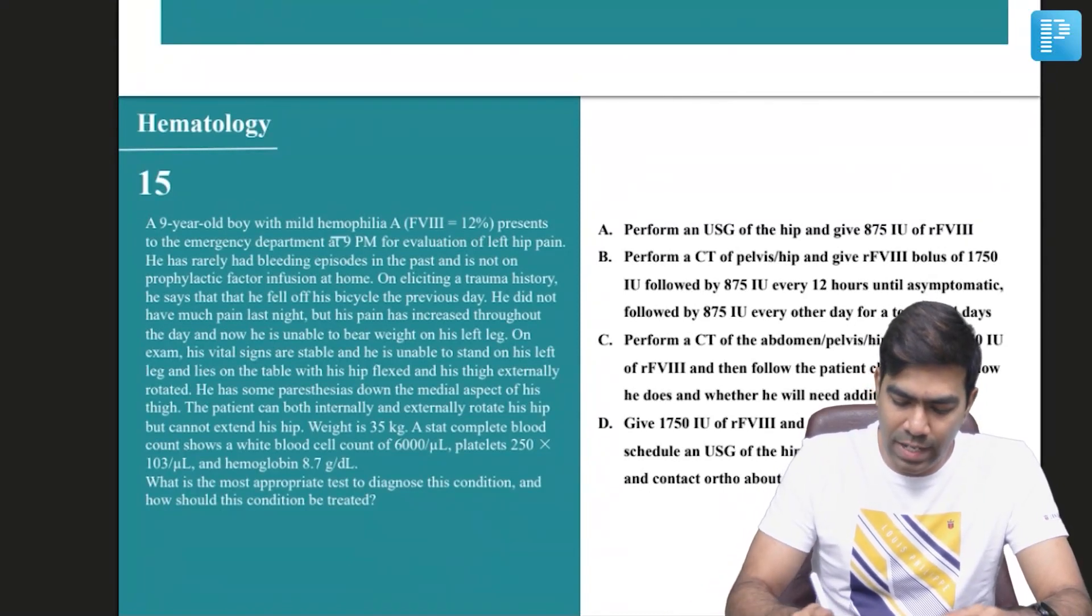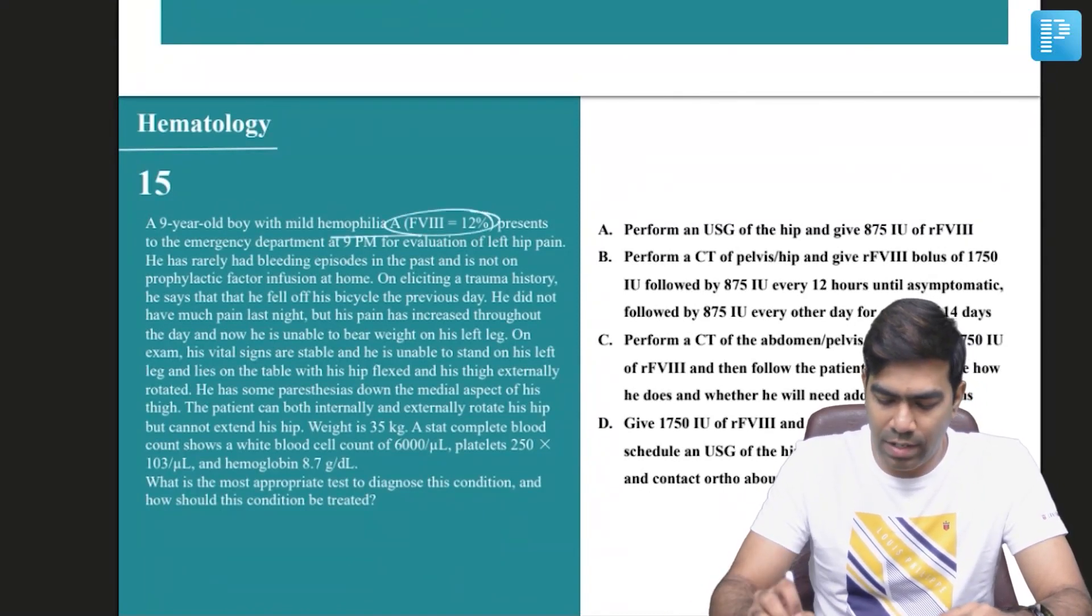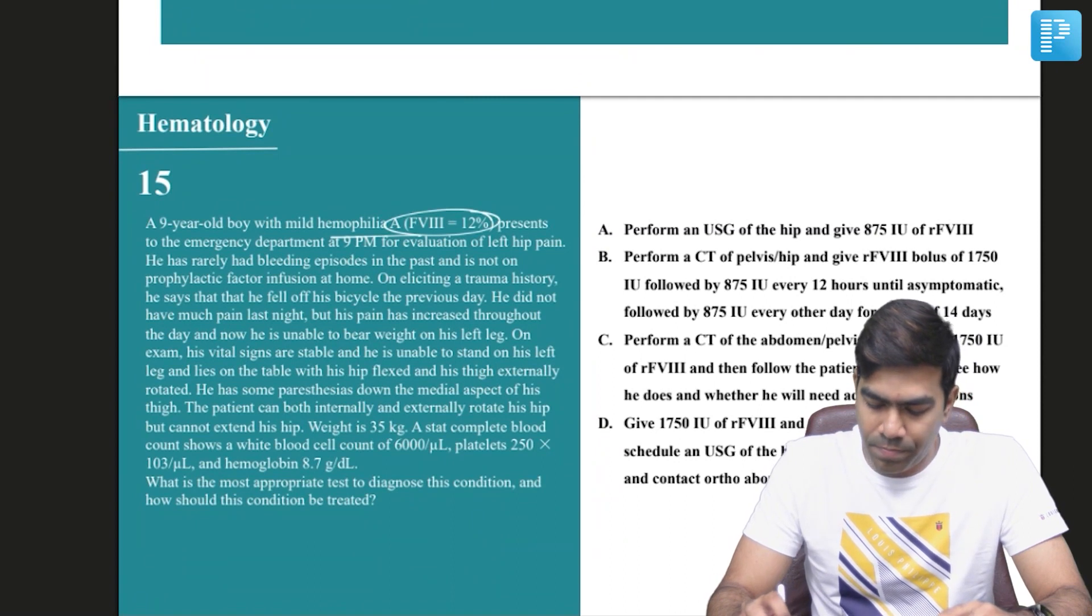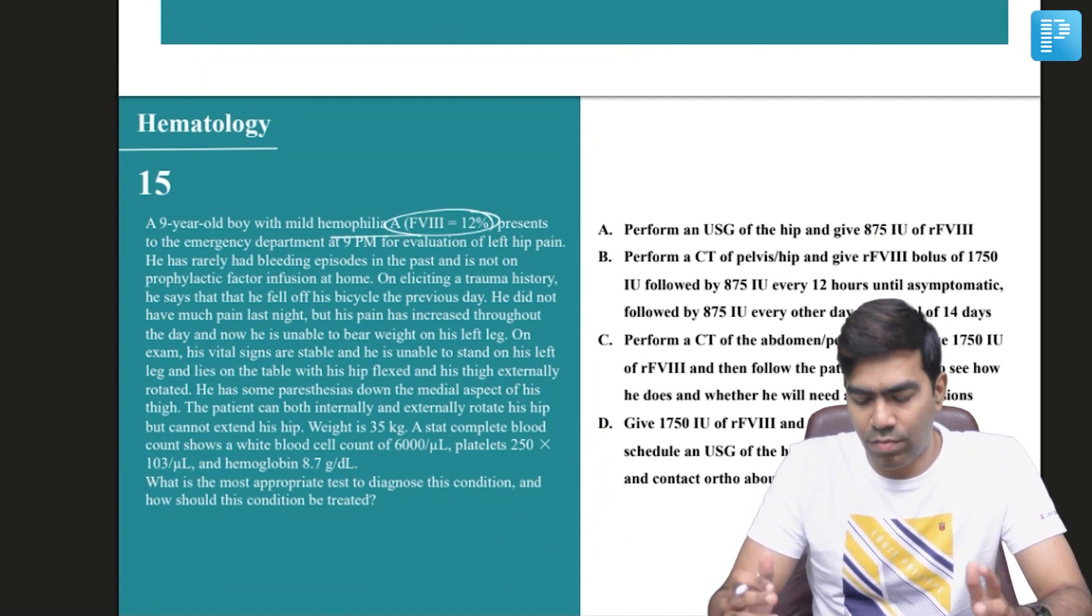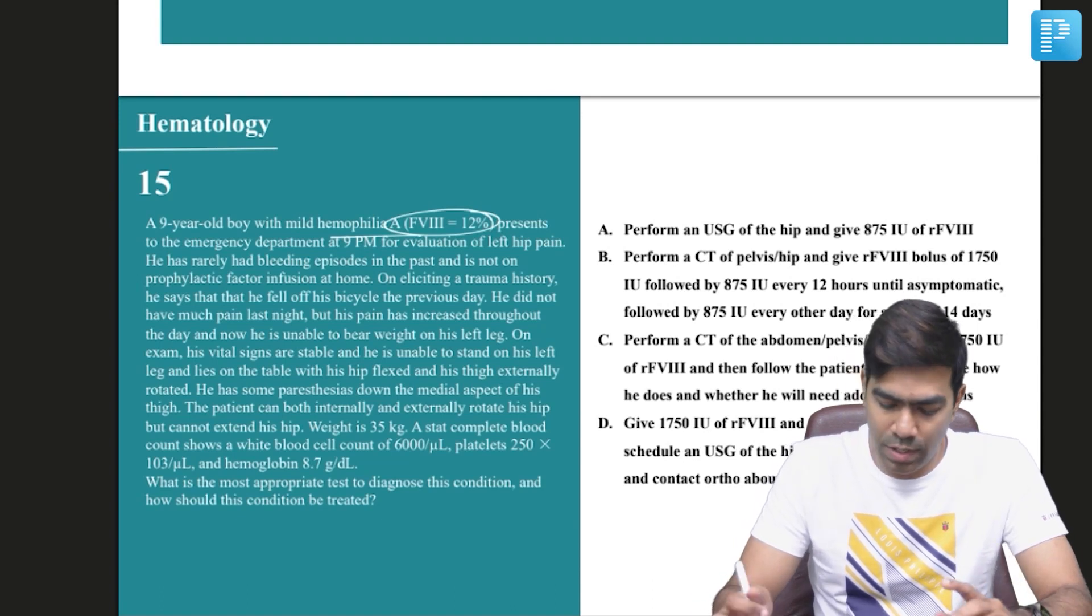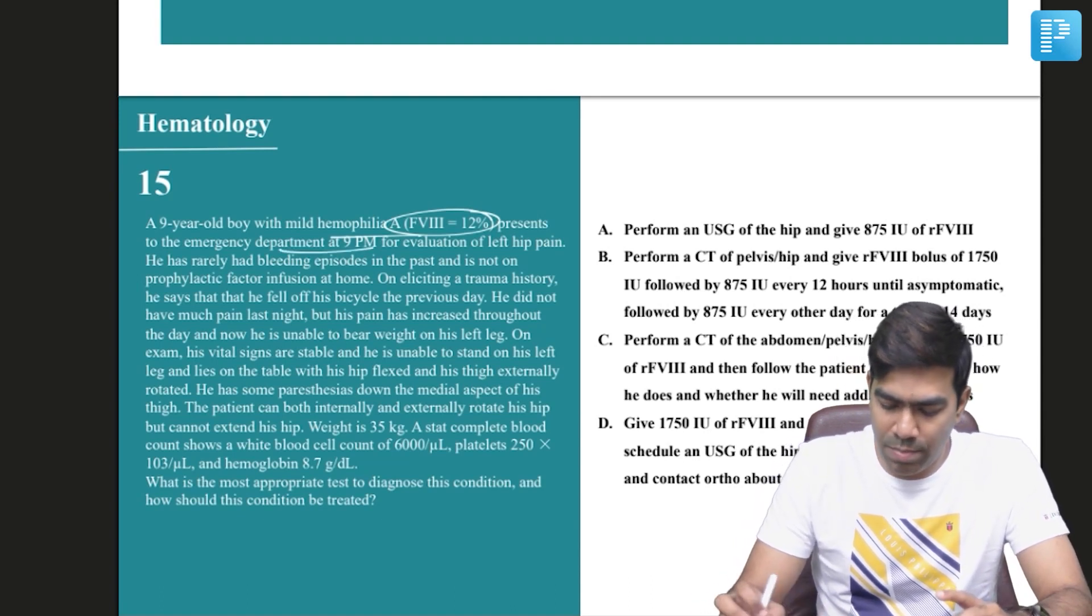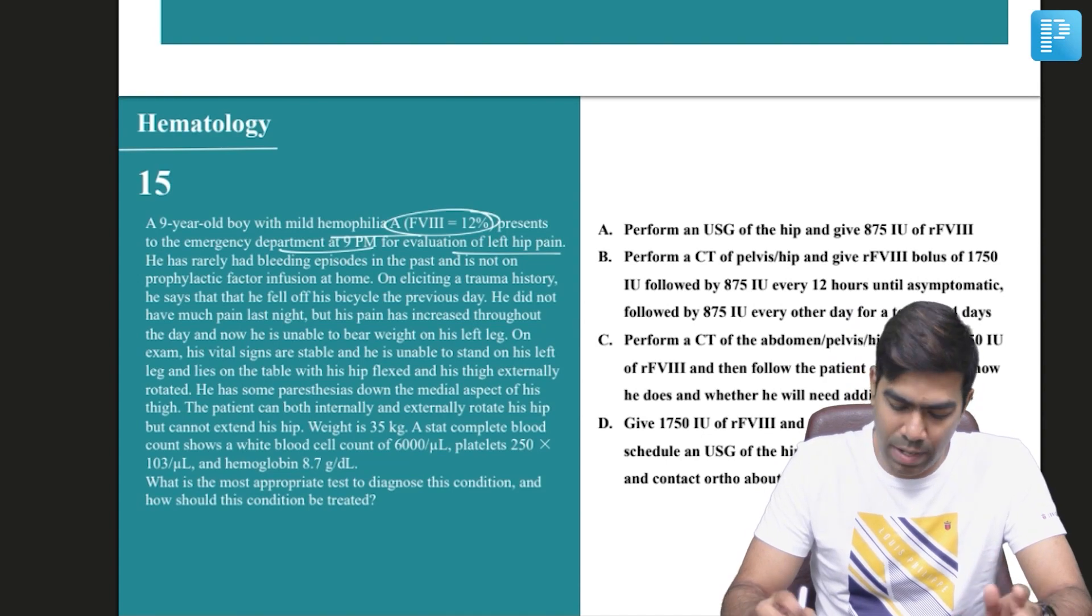Here is a nine-year-old boy with mild hemophilia having a factor 8 concentration in the blood of approximately 12 percent. Anything in the range of 5 to 50 percent is considered to be mild hemophilia. He presented at the emergency department at 9 p.m. for evaluation of left hip pain.